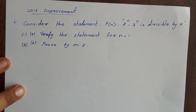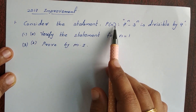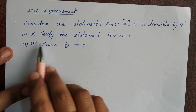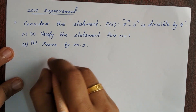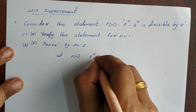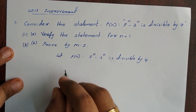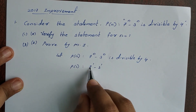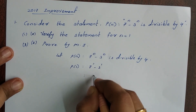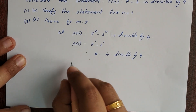Next question, 2017 improvement question, March, 4 marks. Consider the statement P of n: 7 raised to n minus 3 raised to n is divisible by 4. Verify the statement for n equals 1 and prove by mathematical induction. For P of 1: 7 raised to 1 minus 3 raised to 1 equals 7 minus 3 equals 4, and 4 is divisible by 4. So P of 1 is true.